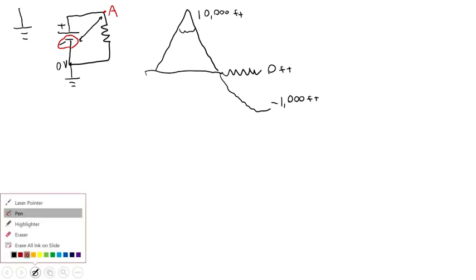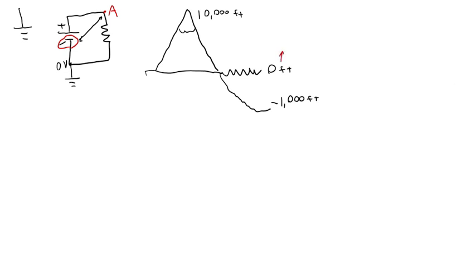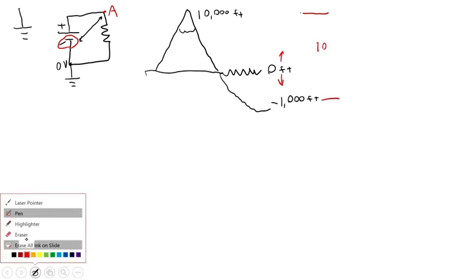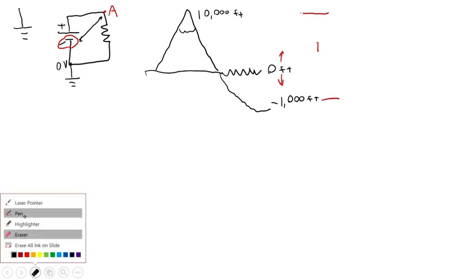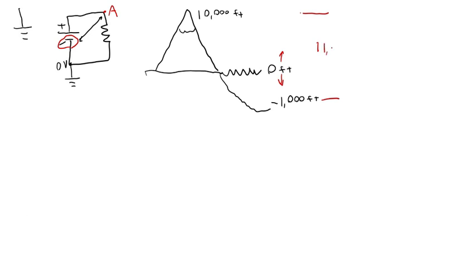And what you'll notice there is that I can redefine zero to be wherever I want. I could move zero up and down, sea level is arbitrary, but that isn't going to change the fact that there's an 11,000 foot difference between the top of the mountain and the bottom of the ocean.